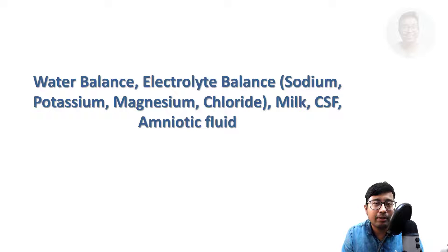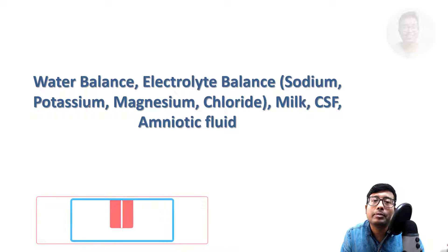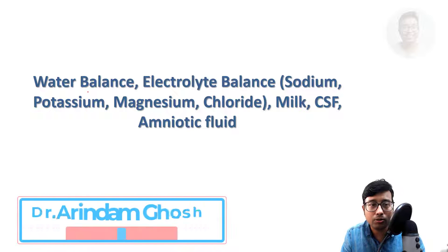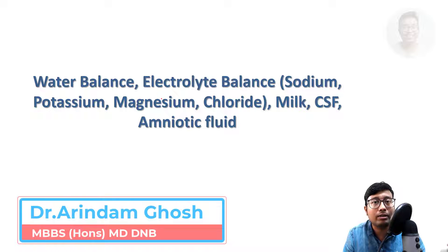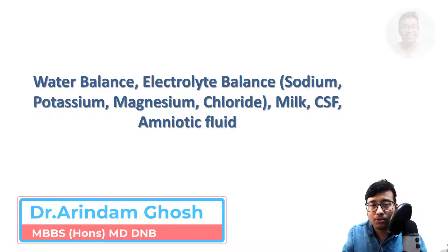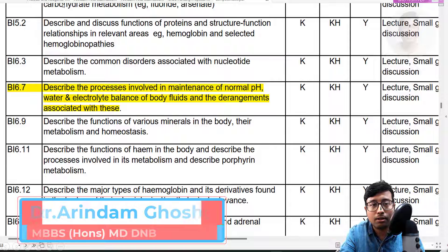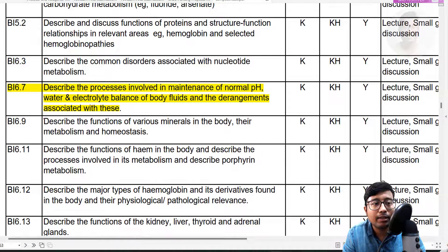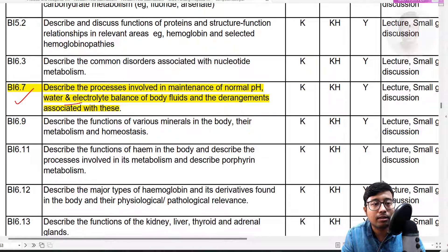Hello students. From this class we will be starting a new series which will cover topics included in your competency number BI 6.7. You can see all the things related to water electrolyte balance are there in 6.7.